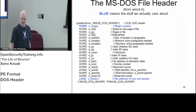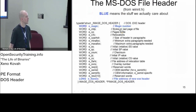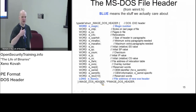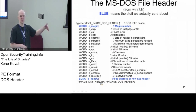All the rest is DOS stuff, so we don't really care about it. We care about the magic value at the beginning — a common thing with file formats, you need to say what kind of file you are so people can parse you. We care about the magic at the beginning, and we care about e_lfanew, which is basically an offset to the next structure — just how do I get to the next structure, which is what I really care about.